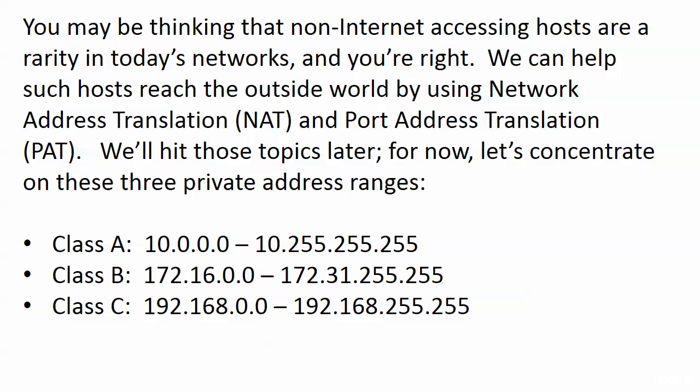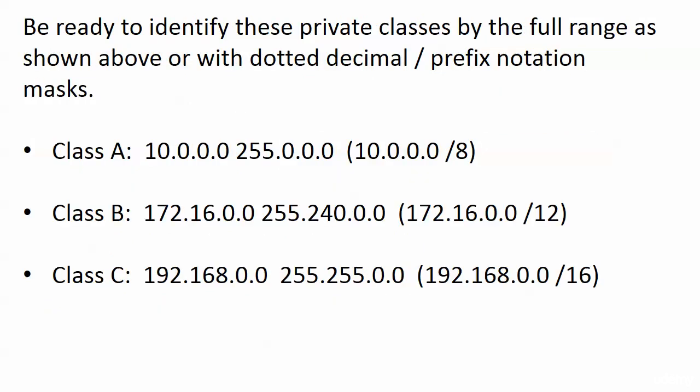I have the private address ranges expressed three different ways — one on this screen, two on the next. Whichever one you're more comfortable with, on your exam be ready to identify an address from a private address range. Class A: any address from 10.0.0.0 through 10.255.255.255 is a private address. In the Class B range, 172.16.0.0 through 172.31.255.255 is an unroutable address. Class C: the range is 192.168.0.0 through 192.168.255.255. These are the exact same ranges, just expressed with dotted decimal masks and then prefix notation masks.